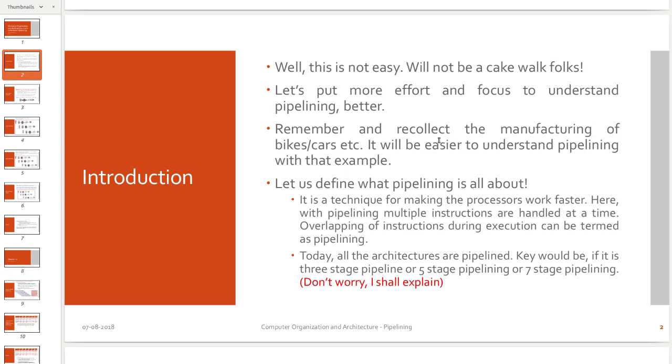Let us consider the assembly line where cars or bikes or any automobile is manufactured. Consider the painting stage. When the first vehicle is painted, the second vehicle should be readily available for the painting to be started. This is called pipelining. Why should it be ready? They cannot waste time, obviously time is to be saved.